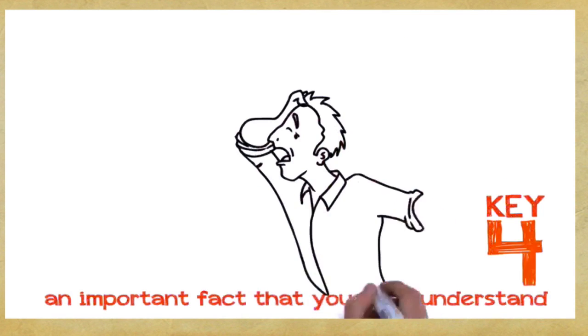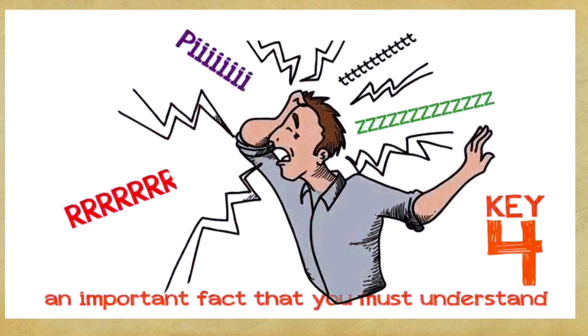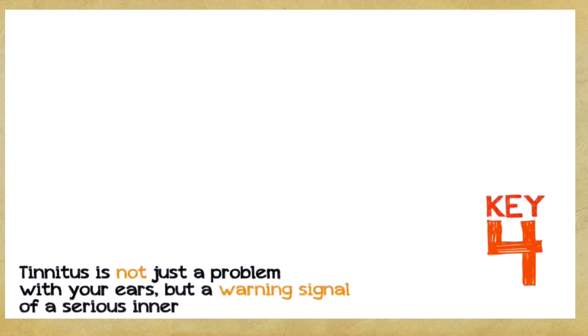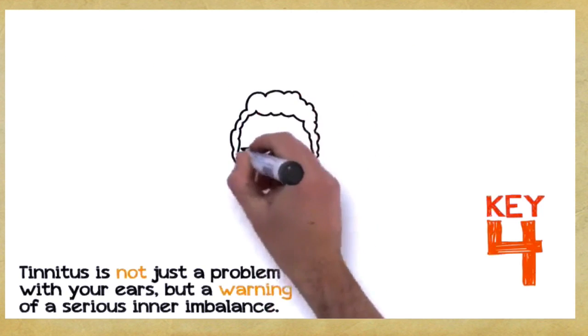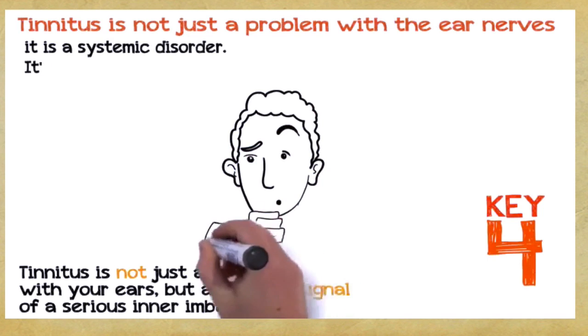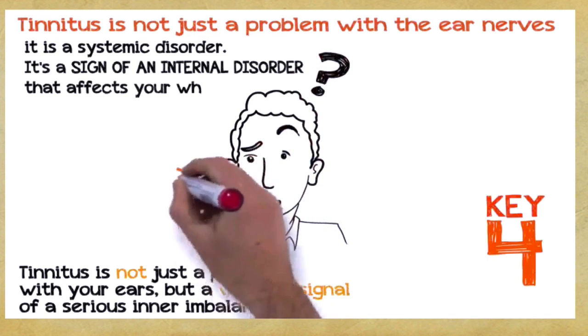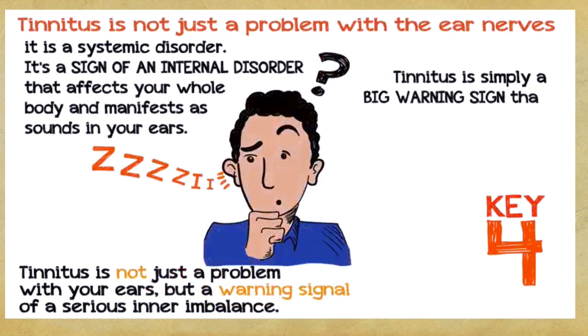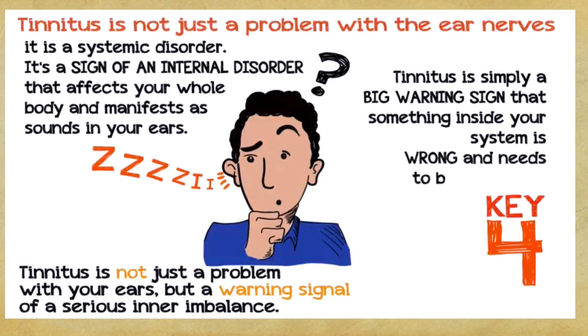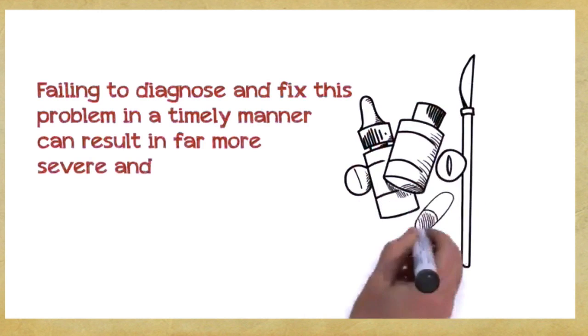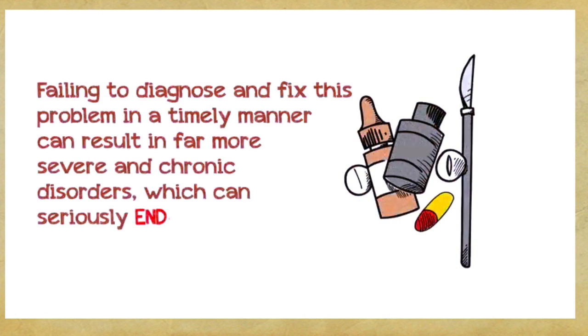Key number four. This is a very important fact that you absolutely must understand if you want to save hundreds or even thousands of dollars. Tinnitus is not just a problem with your ears, but a warning signal of a serious inner imbalance. In the vast majority of cases, tinnitus is not just a problem with the ear nerves, it's a systemic disorder. It's a sign of an internal disorder that affects your whole body and manifests as sounds in your ears. Tinnitus is simply a big warning sign that something inside your system is wrong and needs to be corrected. Failing to diagnose and fix this problem in a timely manner can result in a far more severe and chronic disorder, which can seriously endanger your health.